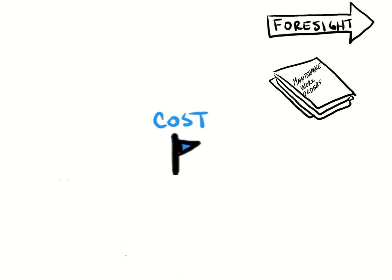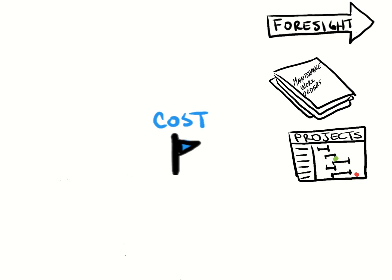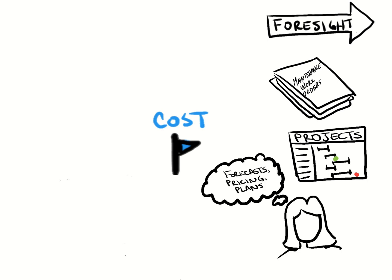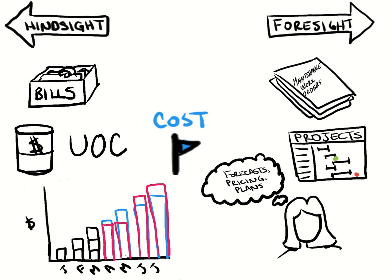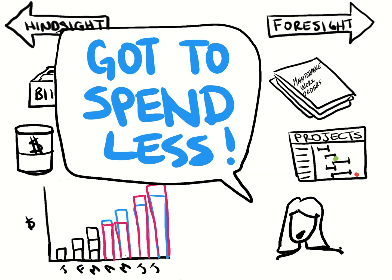Foresight metrics for cost look at what your future work plans are, including how much maintenance you'll be doing, any major projects, and the knowledge of how raw material costs might change. Combining our known costs and adding the knowledge of where our costs might be different based on plans for the future are a good way to make a budget prediction or to update our latest estimate for the year. But what if it's still too expensive?